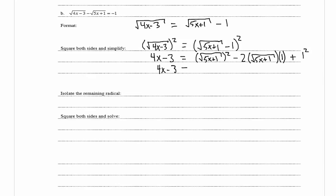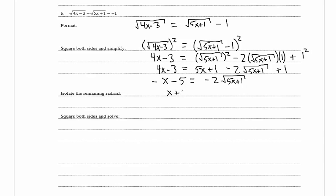Simplifying: 4x minus 3 equals 5x plus 1 minus 2 times the square root of 5x plus 1 plus 1. Now we move all terms except the radical to the left side. Subtracting 5x gives 4x minus 5x equals negative x, and negative 3 minus 2 equals negative 5, giving negative x minus 5 equals negative 2 times the square root of 5x plus 1. Multiplying both sides by negative 1 gives x plus 5 equals 2 times the square root of 5x plus 1.